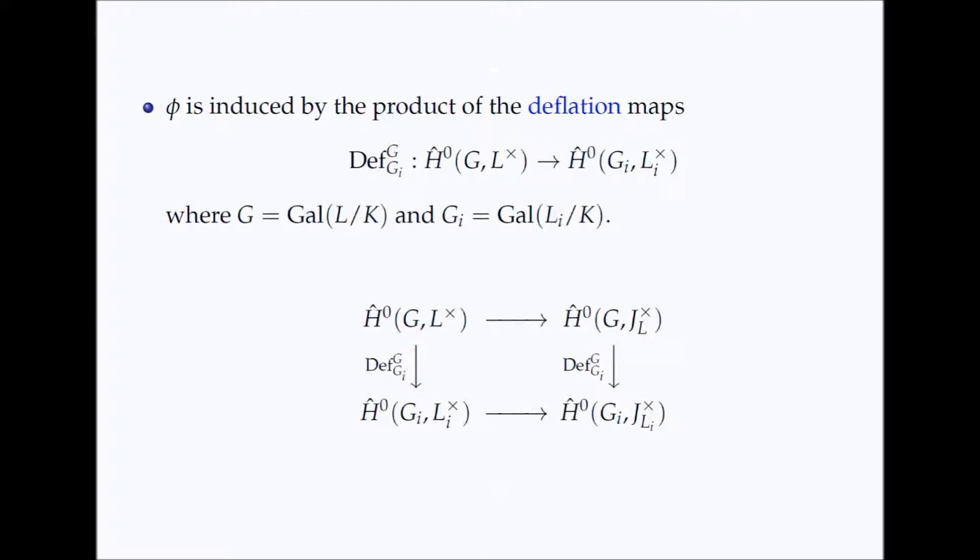By keeping track of how the deflation map is transformed by the isomorphisms that we use to describe the Tate-Shafarevich groups, we are able to give an alternative description of the map phi in terms of cohomology groups with integer coefficients. And ultimately this allows us to prove that phi is surjective.